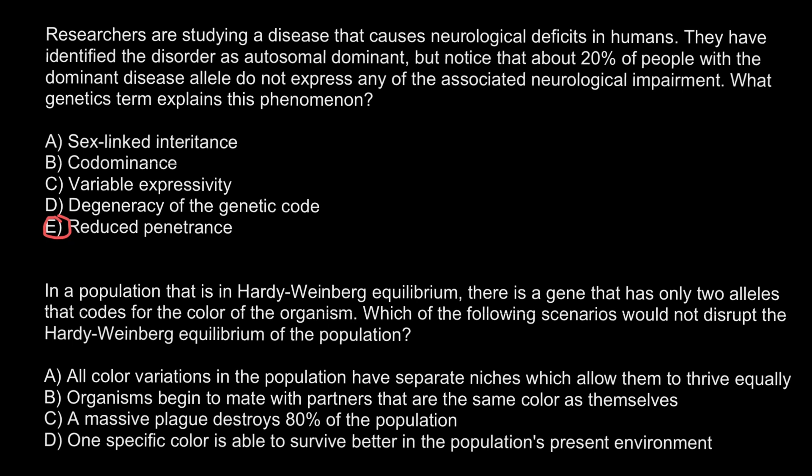Some diseases — for example, some types of cancer — even if you inherit a certain allele, it's not necessary that you are going to get that disease. Environmental factors also play a role. For example, you may live in the north where you won't be exposed to extensive ultraviolet radiation, and even with a defective allele you won't develop skin cancer. But with the same genotype, if you move south and are exposed to UV, you probably will develop skin cancer. This is reduced penetrance.